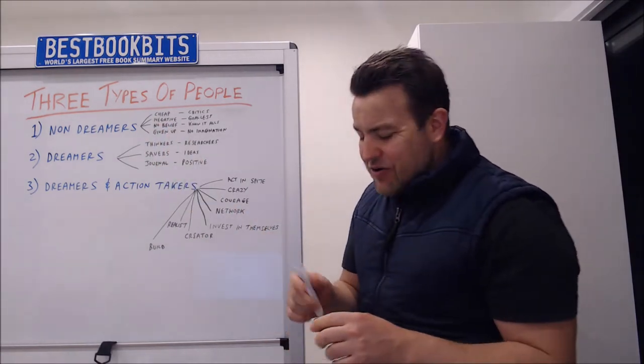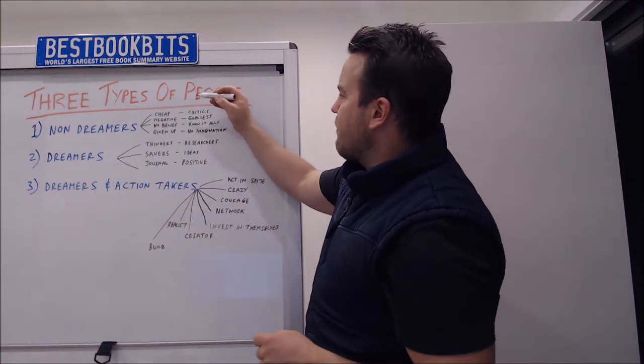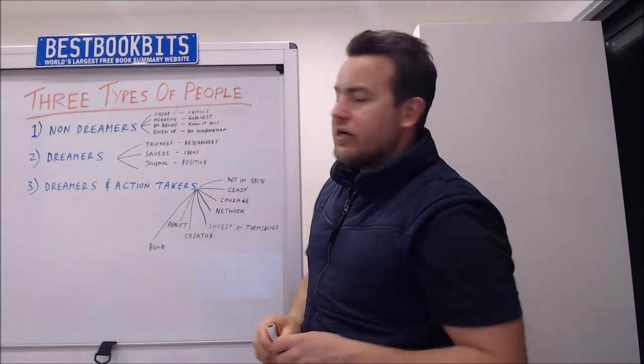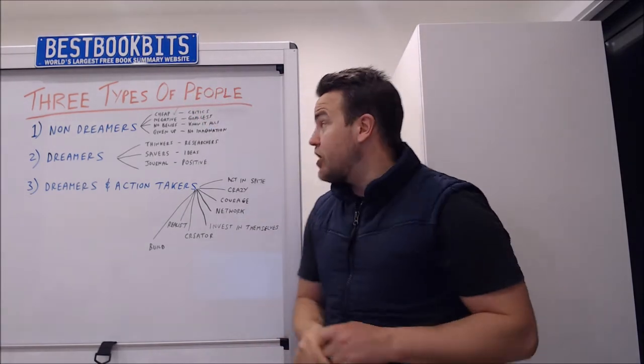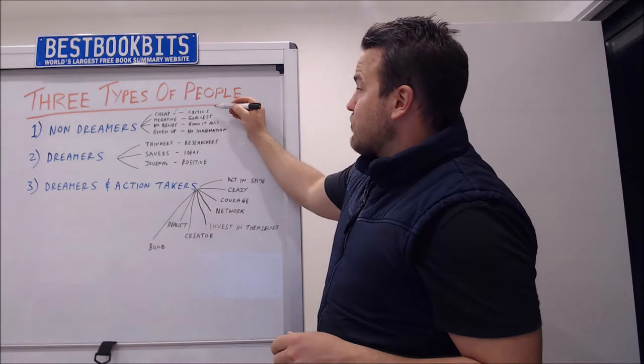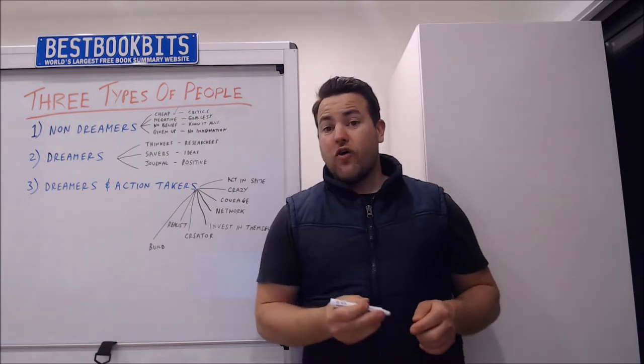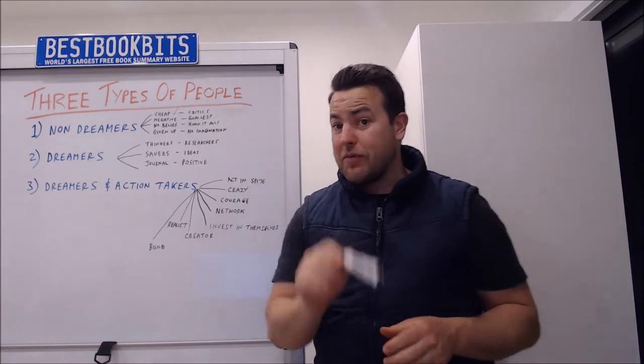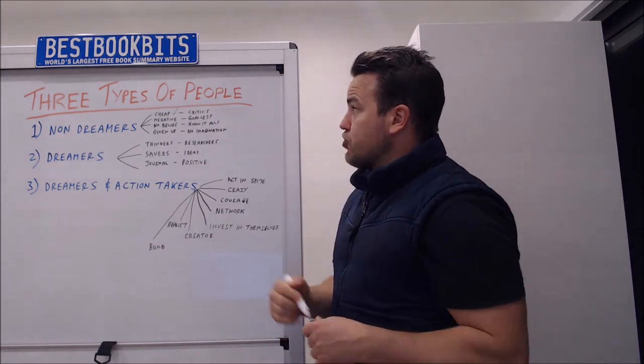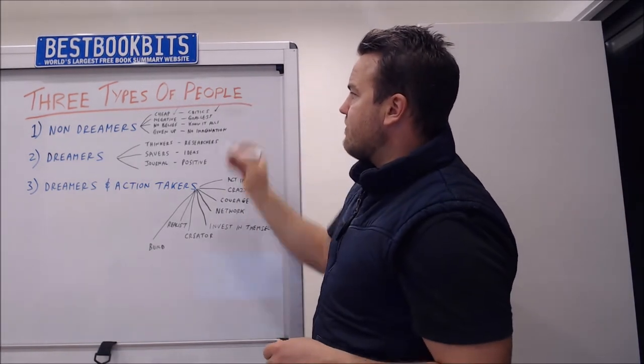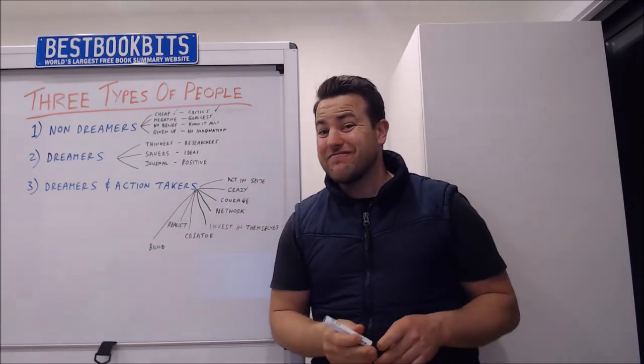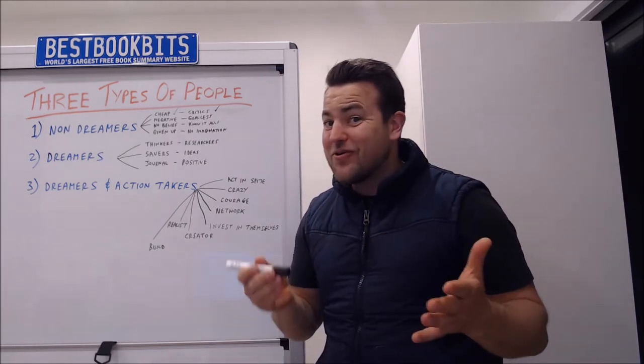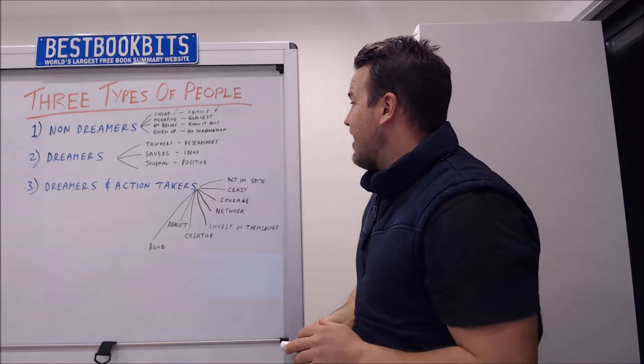So non-dreamers. The characteristics of non-dreamers I find are people that are normally cheap. These people are cheap. Another characteristic, you will find people that are critics and generally aren't people that dream and aren't people that take action. So for non-dreamers we've got cheap critics, people that are negative. If you're negative you probably are a non-dreamer.